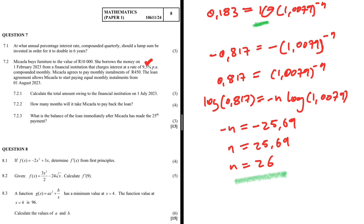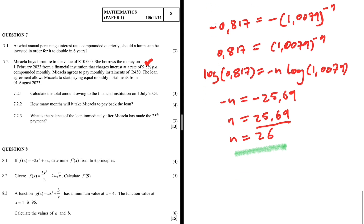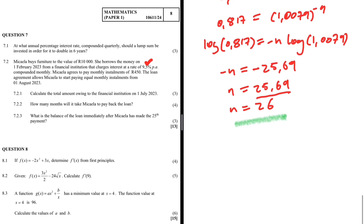It will take 26 months to pay off the loan. Even though the actual value is 25.69, we round up because on the last month we won't pay the full R450 — we'll pay 450 × 0.69, which is the partial payment on the 26th month.